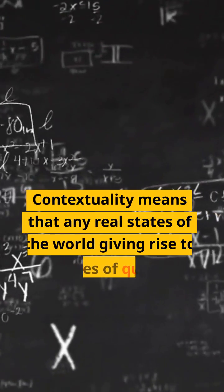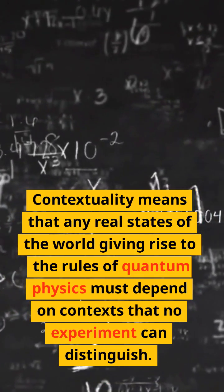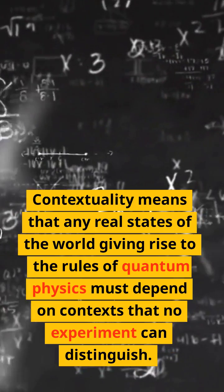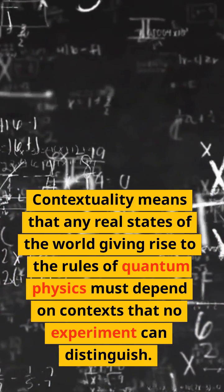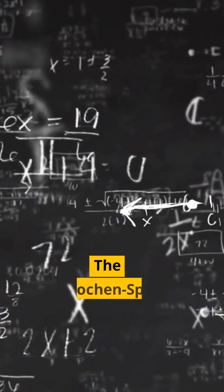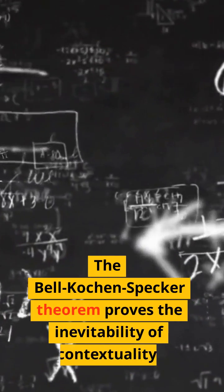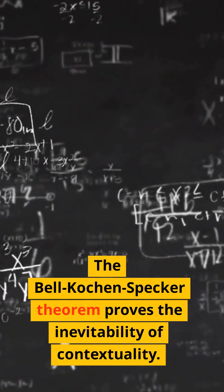Contextuality means that any real states of the world giving rise to the rules of quantum physics must depend on contexts that no experiment can distinguish. The Bell-Cochkin-Specker theorem proves the inevitability of contextuality.